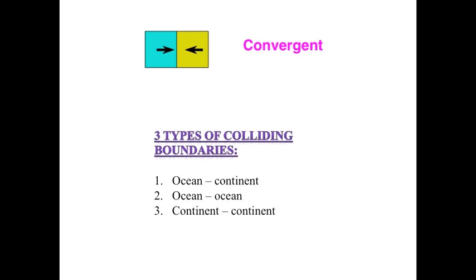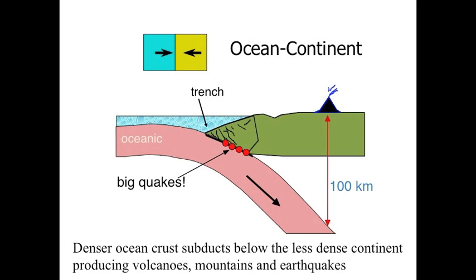Now convergence is a bit more complicated. There can be three types of convergent boundaries. Converge means to come together. The first type is an ocean colliding with a continent. The second is an ocean colliding with another ocean crust. The final type is continental crust colliding with another continental crust. All of them are examples of converging plate boundaries. We will start by looking at the ocean-continent convergent boundary.